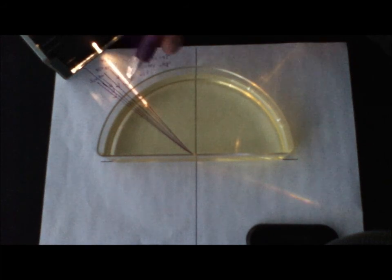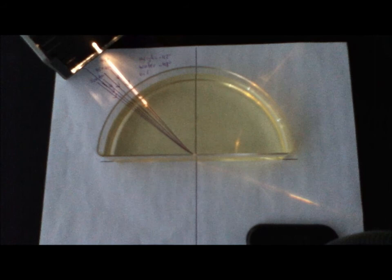This is the third video where we're looking at the lab measuring the critical angle for various media. Now we've got canola oil in our dish here. We're sending light along an incident ray of 40 degrees, hitting our prism.